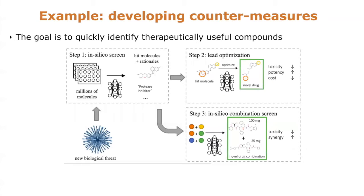This is an illustration of what we do from the point of view of computer science: given a new threat, say a virus, and some limited, fragmented assay data about the ability of different compounds to inhibit viral replication.